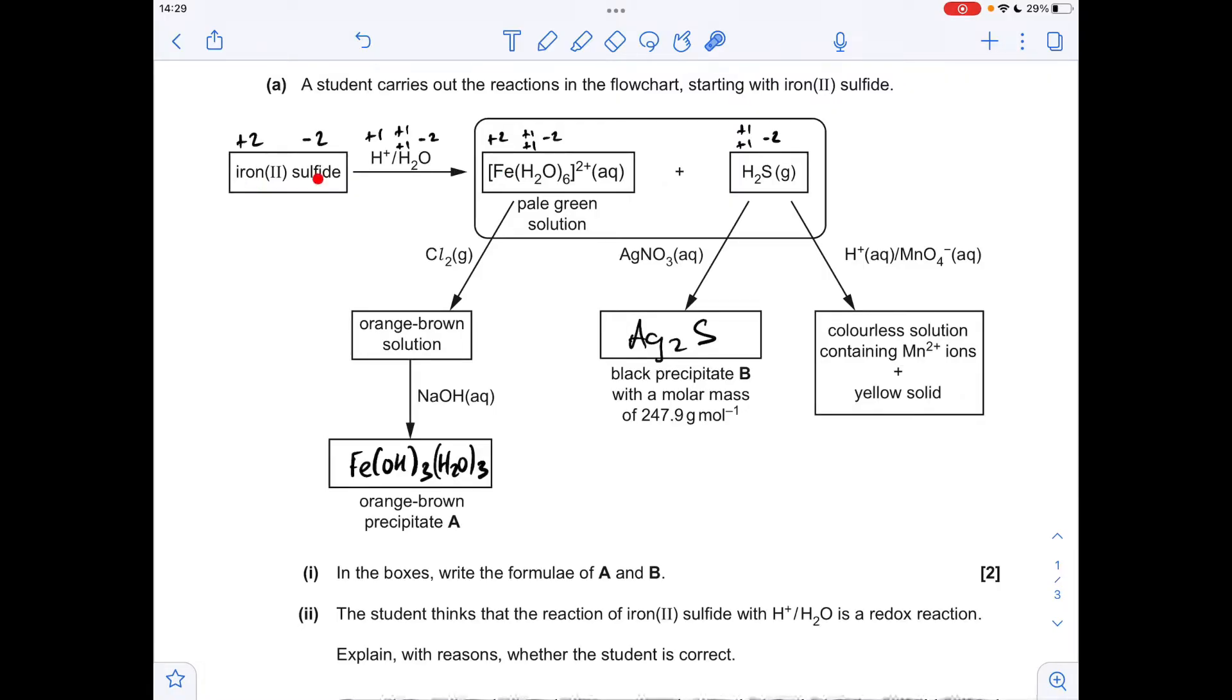So the iron starts out at +2, it finishes at +2. Sulfur starts at -2, stays at -2. Likewise for hydrogen, +1 to +1. Oxygen -2 to -2. So the student is not correct, and we're just going to give a couple of examples of why.